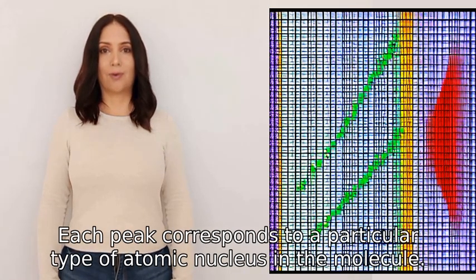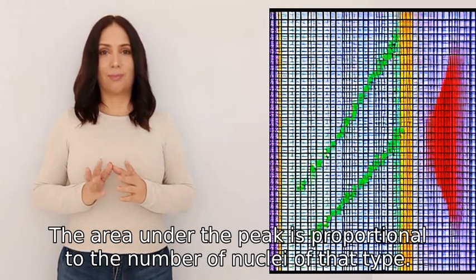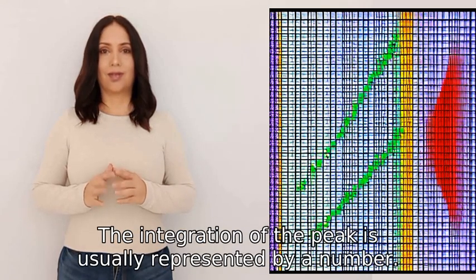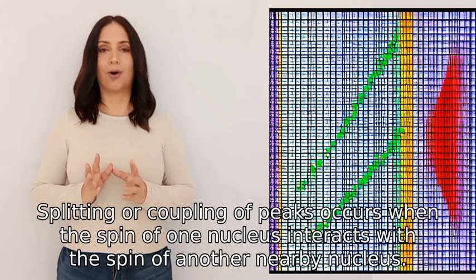The area under the peak is proportional to the number of nuclei of that type. The integration of the peak is usually represented by a number. Splitting or coupling of peaks occurs when the spin of one nucleus interacts with the spin of another nearby nucleus.